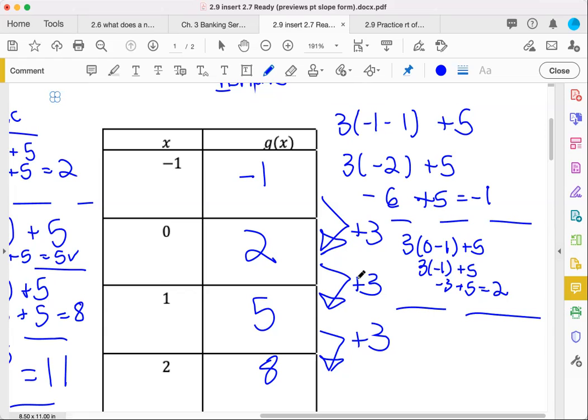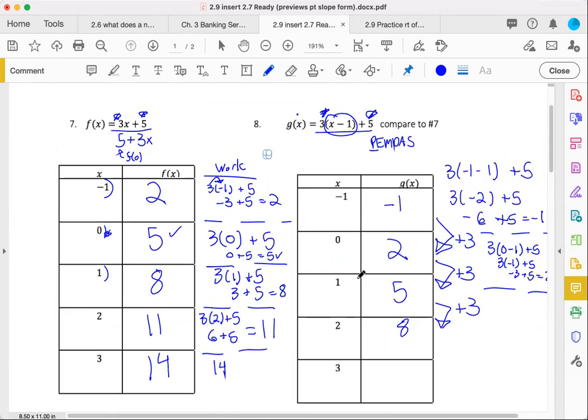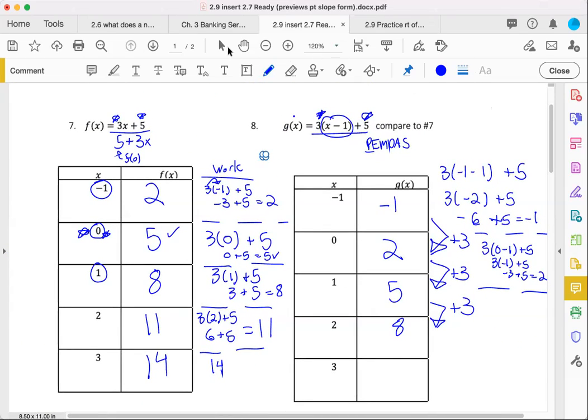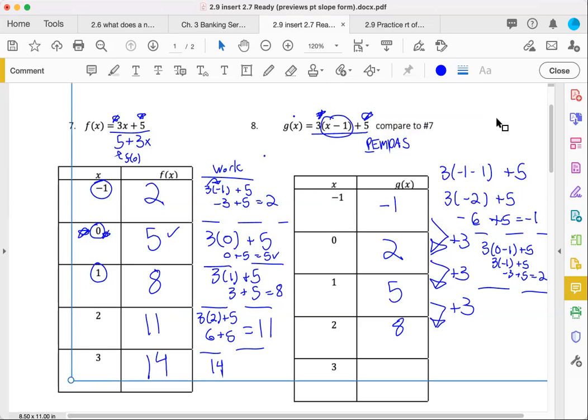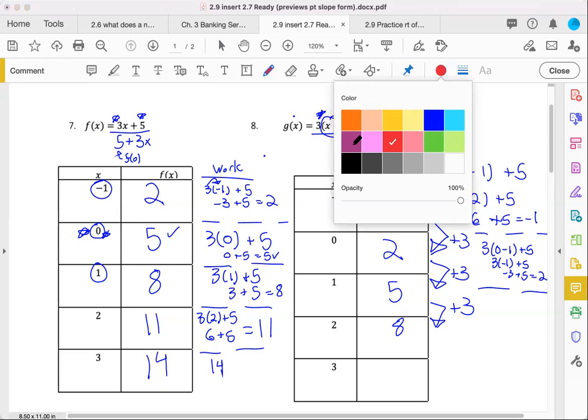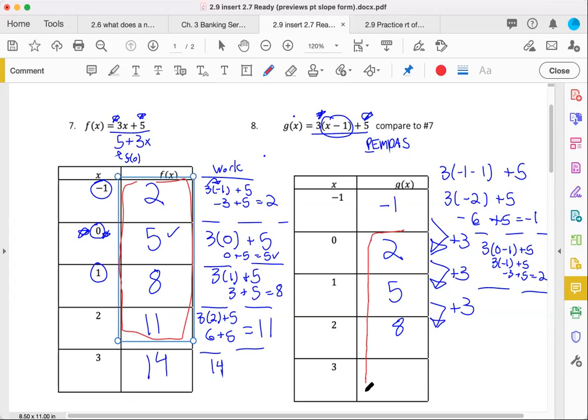And what pattern do you notice as we compare to back here? What do you notice? Do you see any values coming back again? Anything repeating? Hopefully, if you have that watchful eye and you had your coffee today, you notice that the 2, 5, 8, and 11 got shifted up a little bit, didn't they? Isn't that interesting?